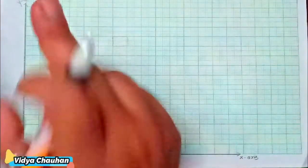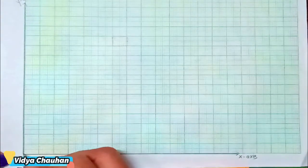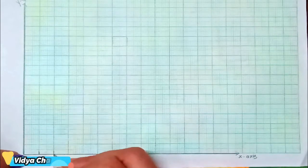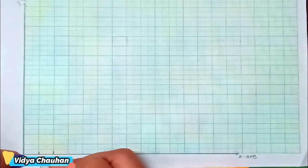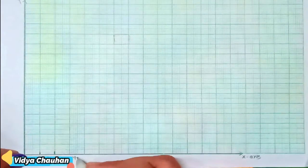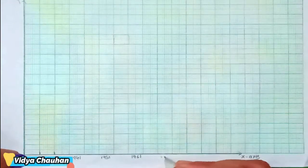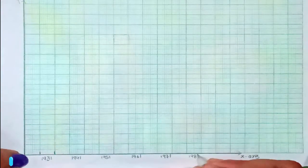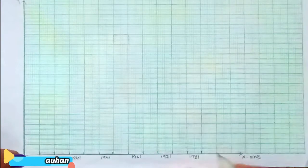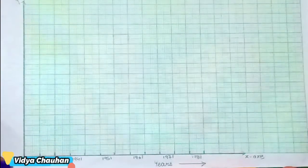On the x-axis we will represent the years of the survey. The initial point is the zero point. Each bar needs one full centimeter box. So the first bar is for 1931, then leaving one box the next is 1941, then 1951, 1961, 1971, and the last is 1981. We label this axis as 'Years'.